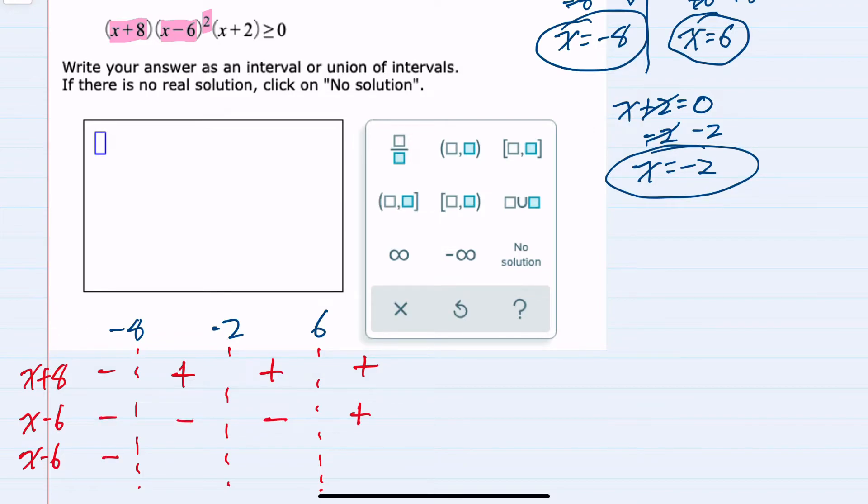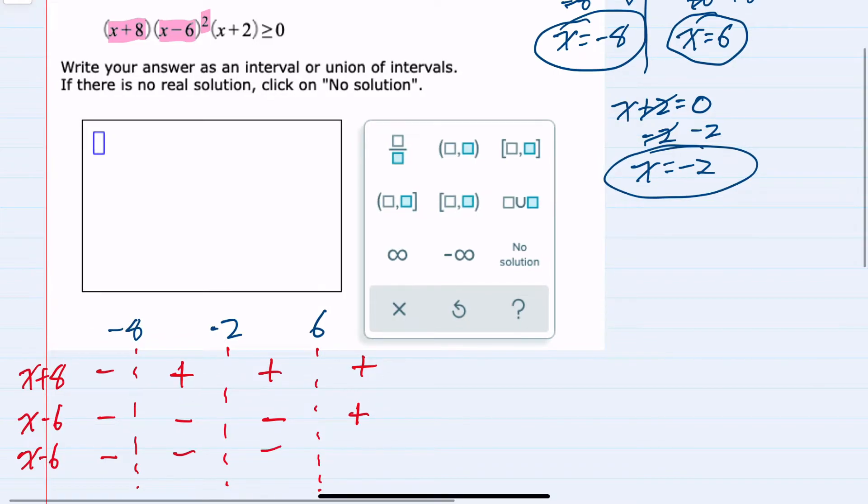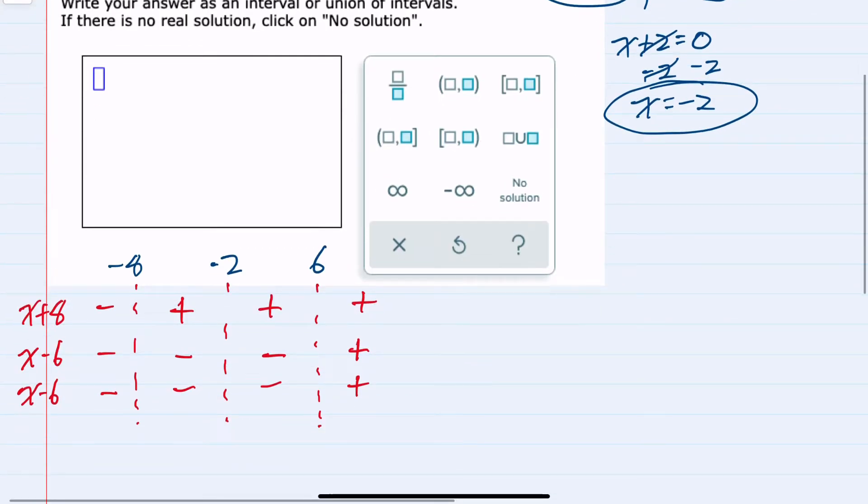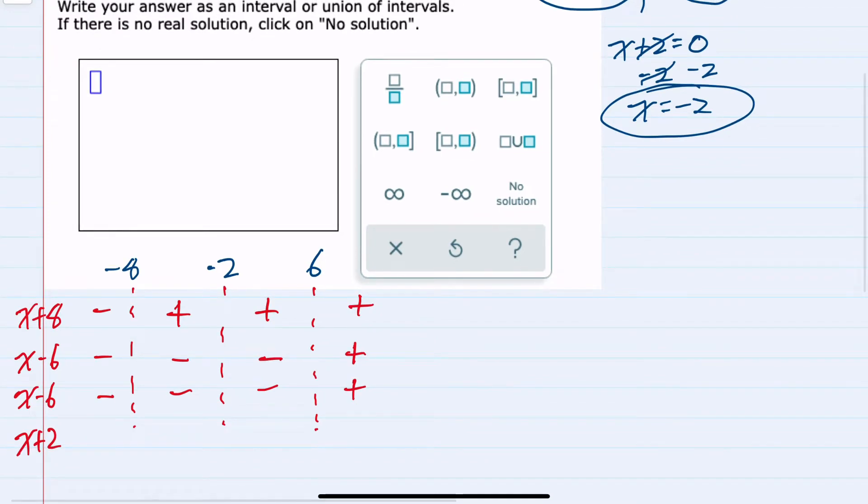And again, I'm writing it twice because x minus 6 is listed as a factor twice. And then lastly, the x plus 2, indicating that x plus 2 is going to be positive for any value greater than negative 2 and negative for any value less than negative 2.